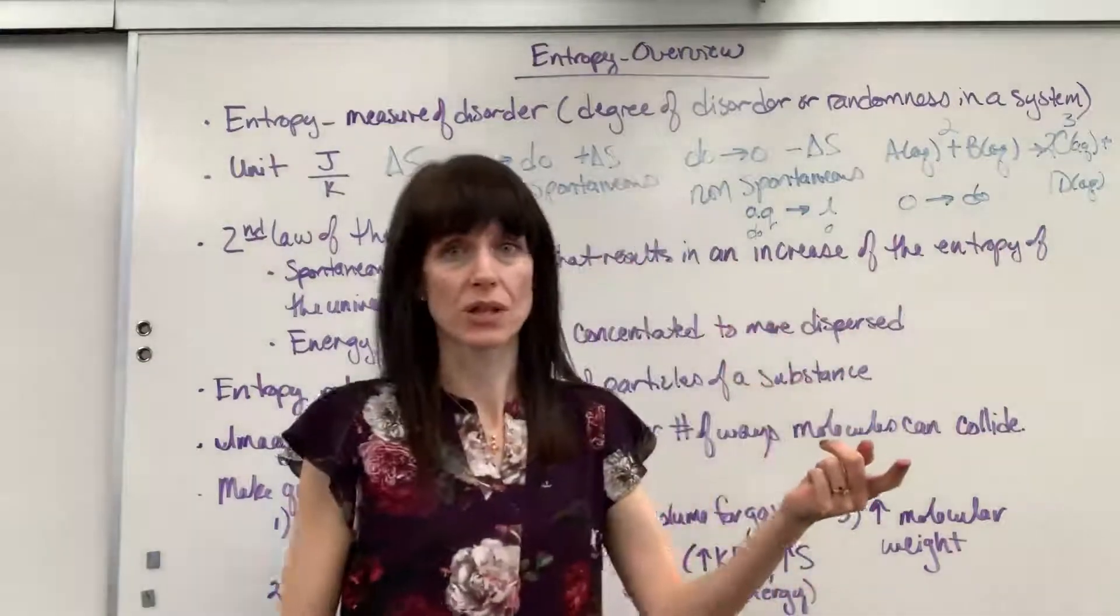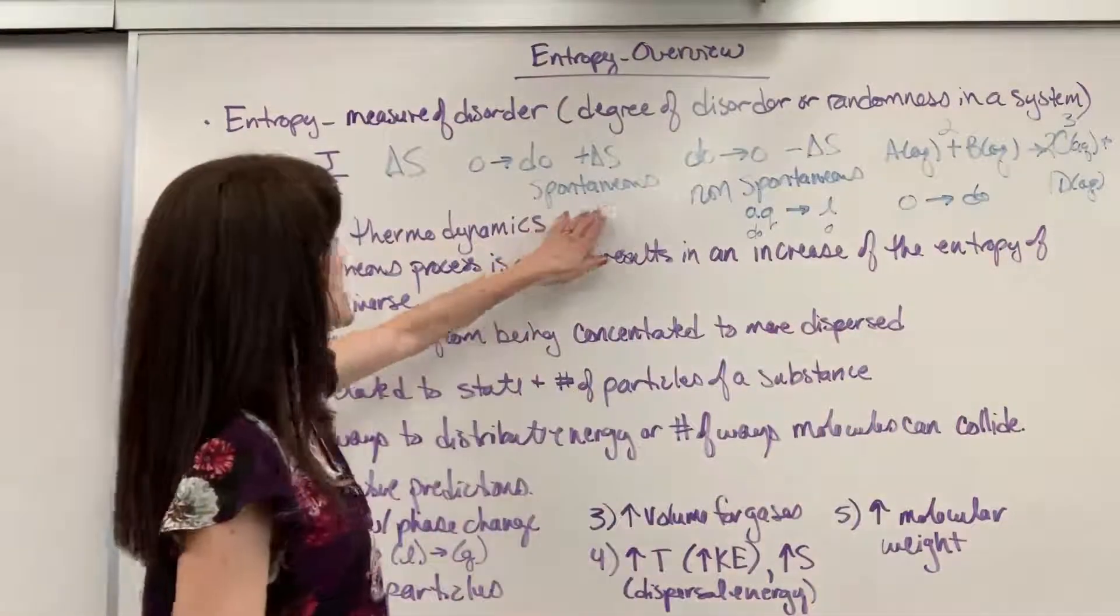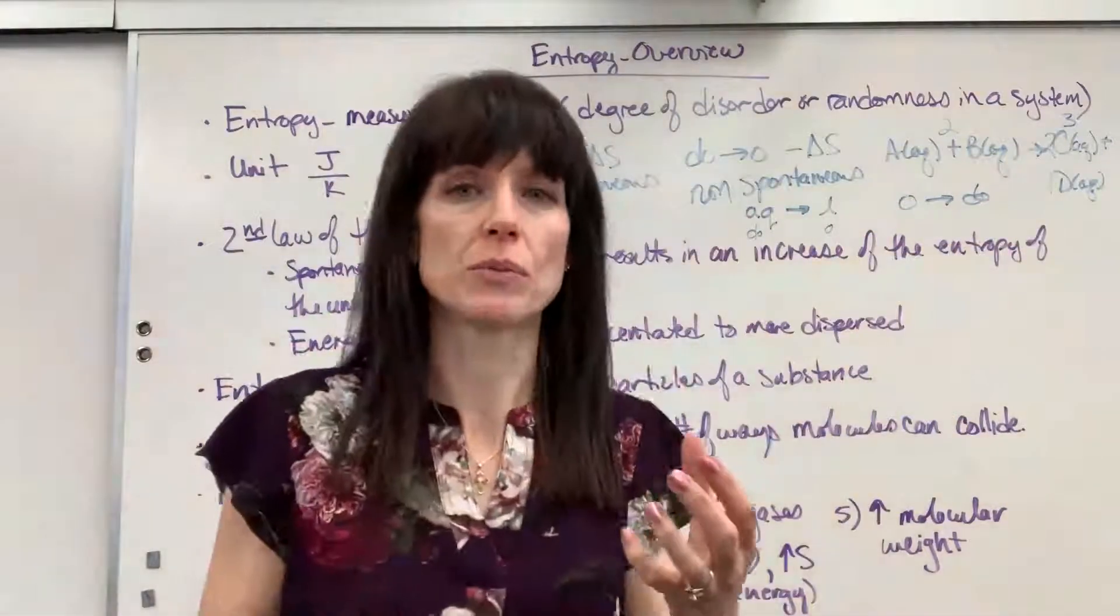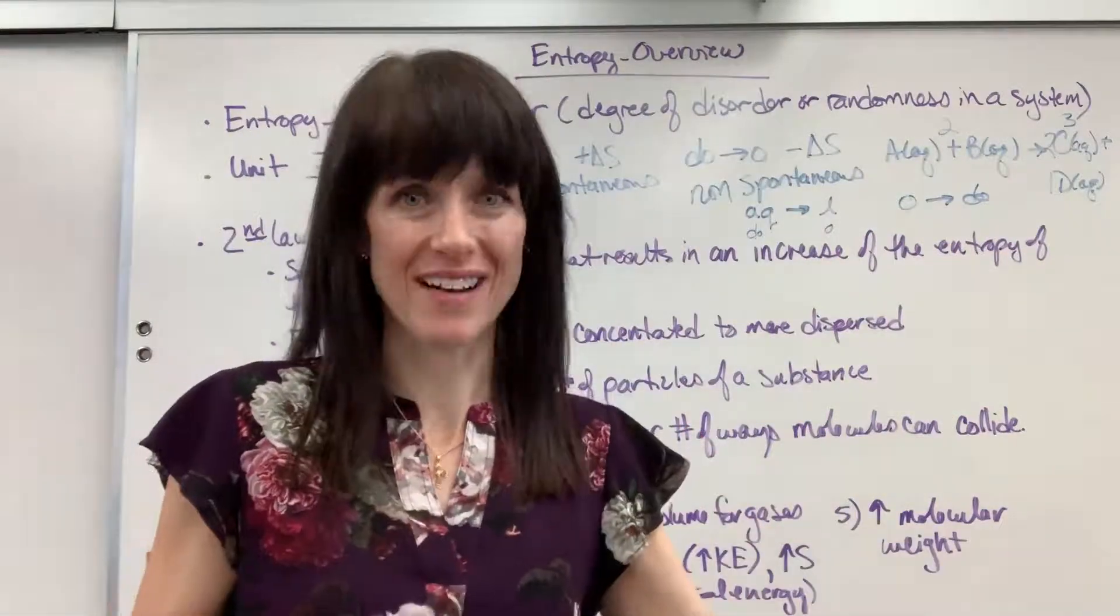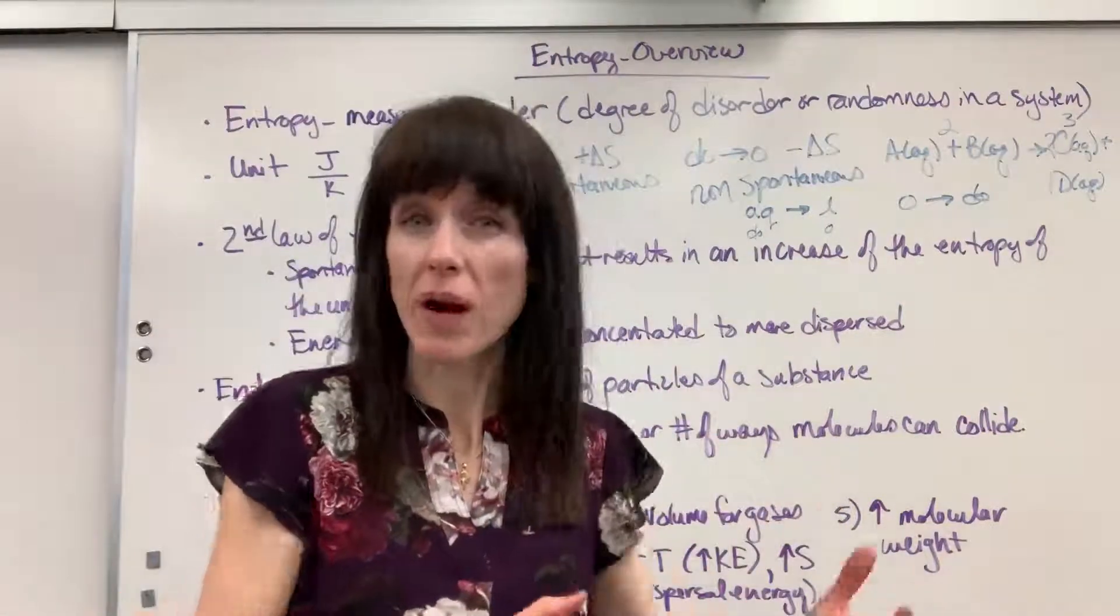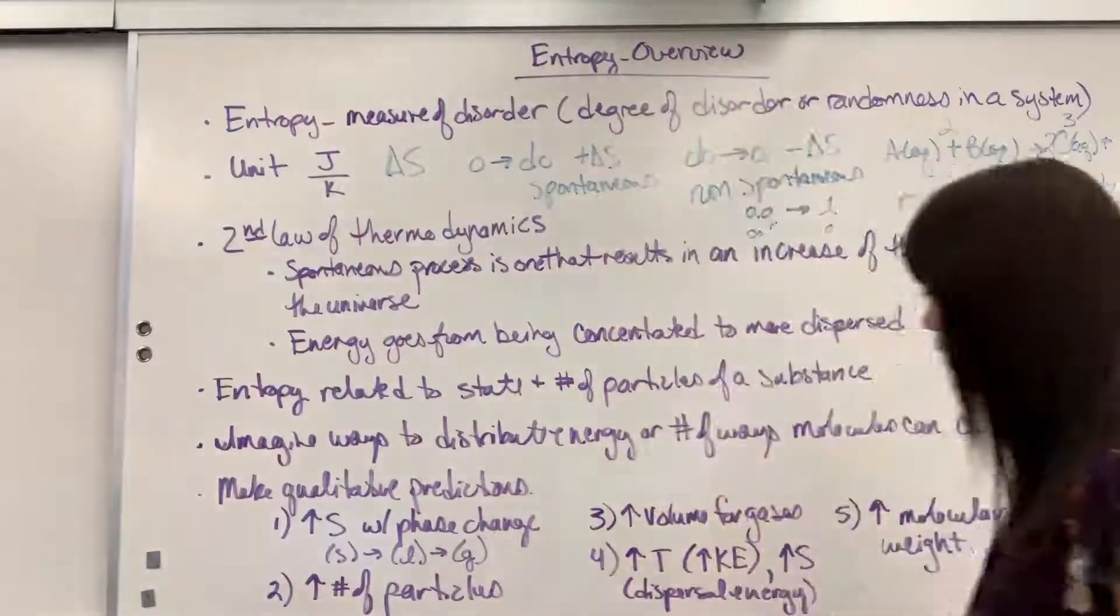I have two total moles on the reactant side, three total moles on the product side. That would go from order to disorder. Okay, that happens naturally. So that's going to be a positive delta S. Going from only two moles to three moles, I have more options and ways to distribute that energy. It becomes more disorganized. So count moles. The more moles you have, the more particles you have, the more disorganized it is.